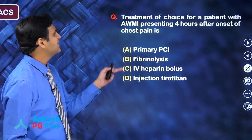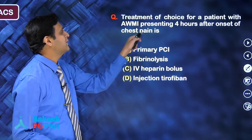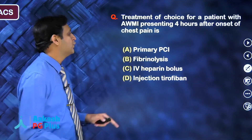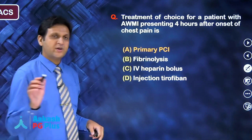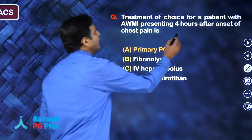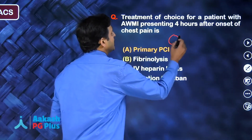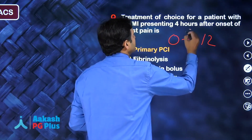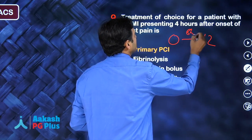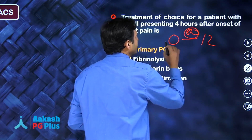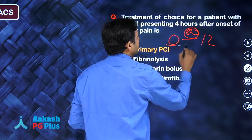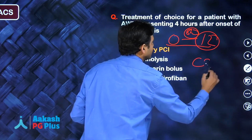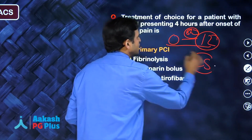Treatment of choice for any patient with anterior MI within the window period is primary PCI. The window period is onset of chest pain to 12 hours. However, you can still thrombolyse a patient after 12 hours if the patient is in cardiogenic shock.